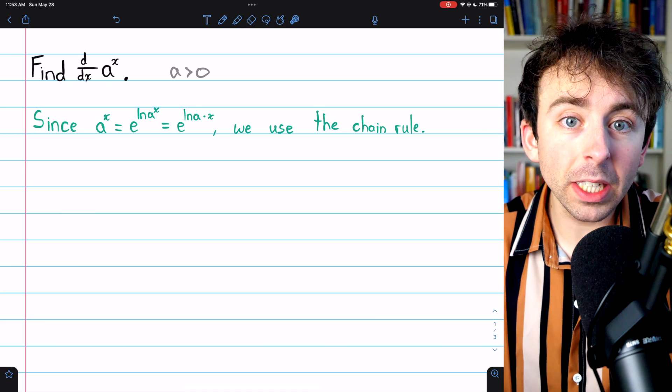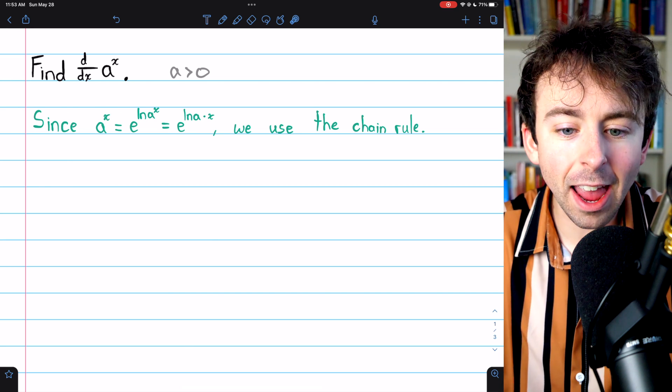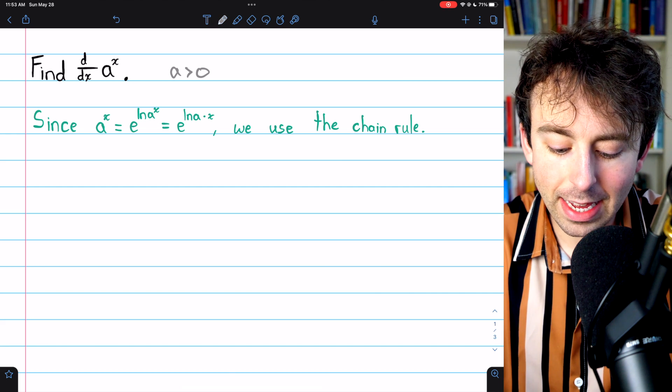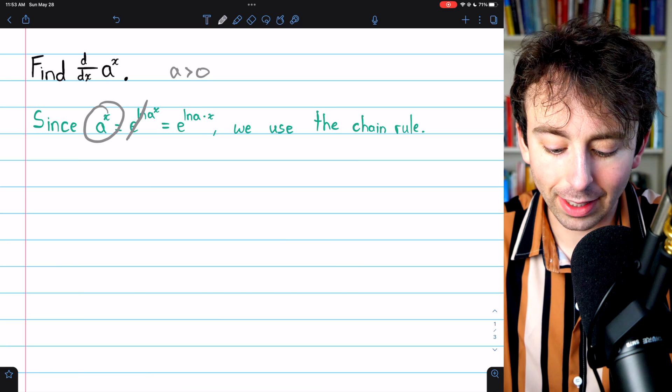Now, we're going to be able to use the chain rule here because a to the x is the same as e to the ln of a to the x, because the e and ln would cancel out and just give us the a to the x back. So certainly that is true.